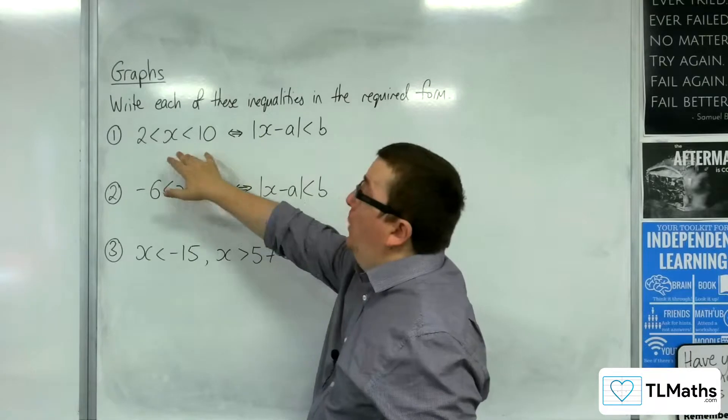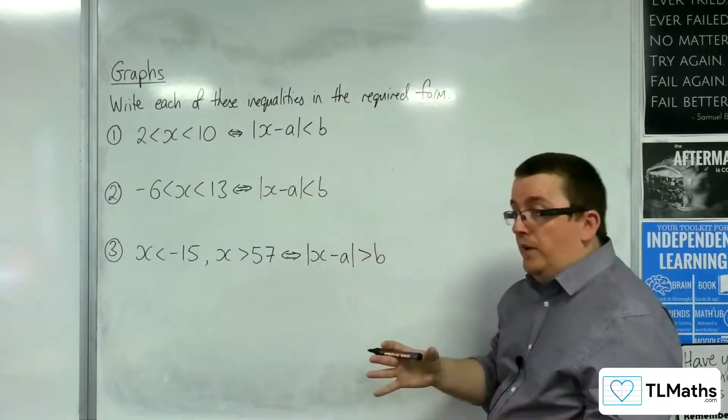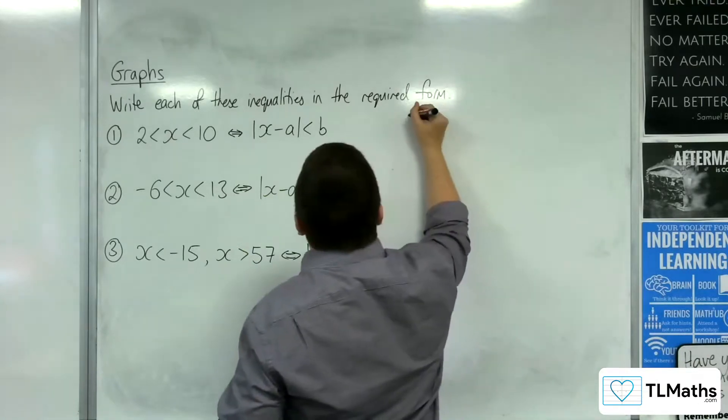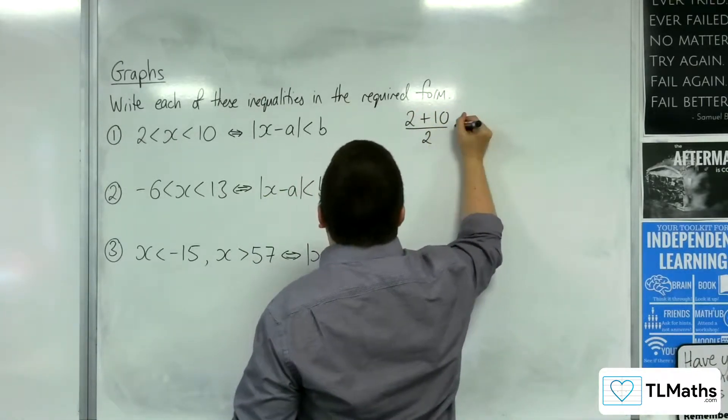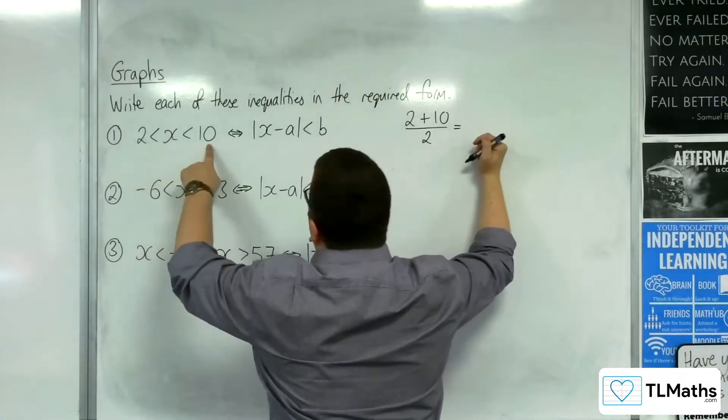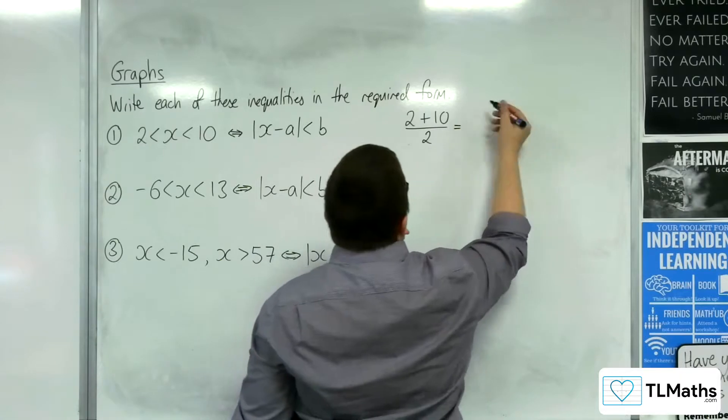If we go through this first one, x is greater than 2 but less than 10. The method I showed you in the previous video started off with us finding the average of the two endpoints of the inequality. So, 2 plus 10 divided by 2, that'd be 12 divided by 2 is 6.